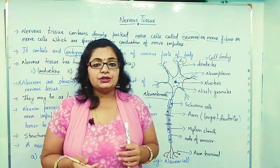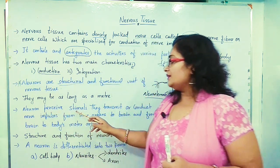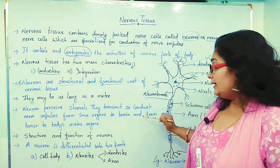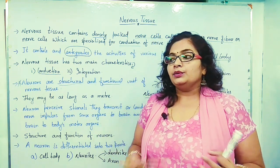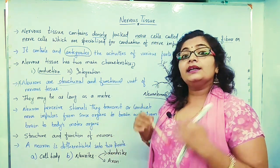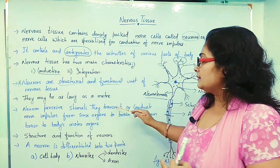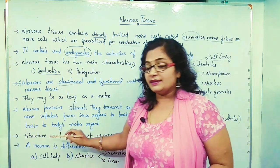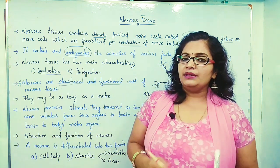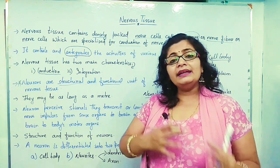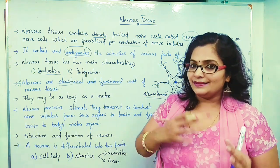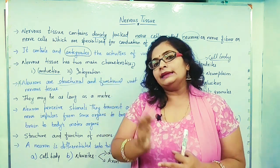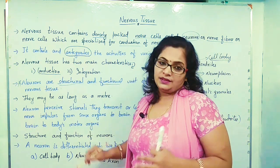Neurons conduct nerve impulses. Neurons perceive stimuli and transmit or conduct nerve impulses from sense organs to the brain. The neurons that carry impulses from sense organs to the brain are called sensory neurons, while the neurons that carry messages from the brain to the effector organs are called motor neurons.